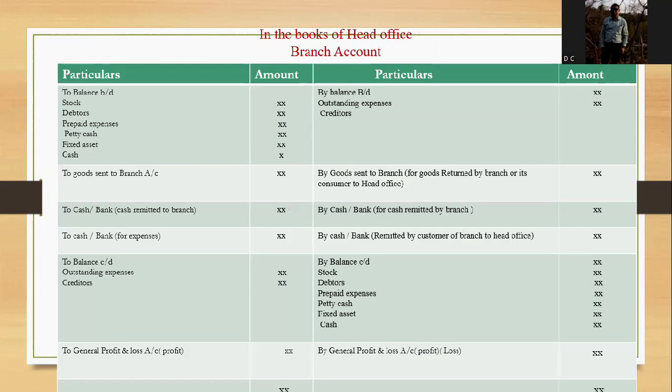To prepare the branch account in the books of the head office under the debtor system, there is a standard format with a debit side and a credit side. In the debit side, there may be: opening stock, opening debtors, opening prepaid expenses, opening petty cash, opening fixed assets such as computers and furniture, and opening cash. When the head office sends goods to the branch, the journal entry is: Branch Account debit, to Goods Sent to Branch Account. When the head office sends cash to the branch, the entry is: Branch Account debit, to Cash or Bank.